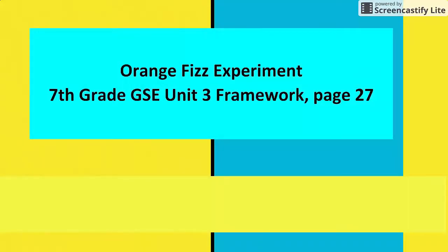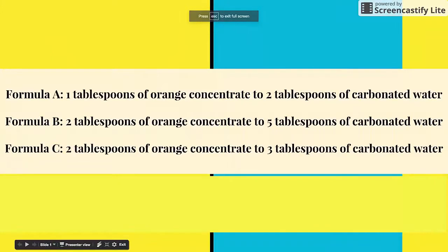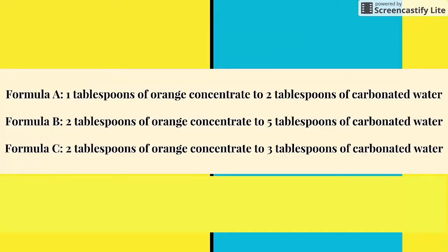The next task we use is the Orange Fizz Experiment, from the 7th grade Georgia Standards of Excellence, Unit 3 Framework, page 27. Students compare three different orange drink mixes to see which has the strongest orange flavor. Each formula contains a different amount of orange concentrate to carbonated water. Students use part-to-part relationships, part-to-whole, fractions with fraction bars, or a number line to determine which formula — A, B, or C — tastes most orangey.